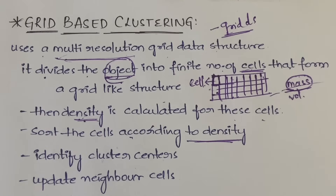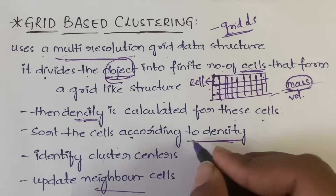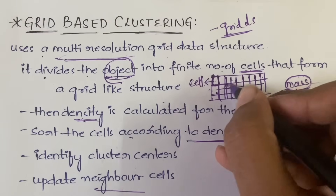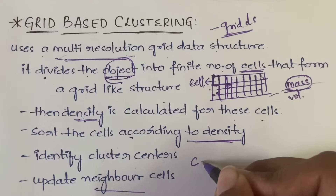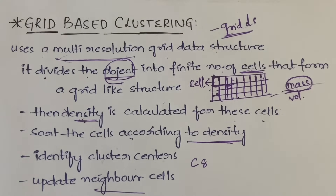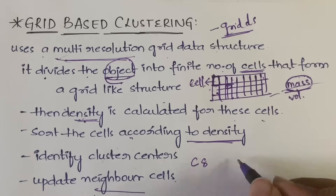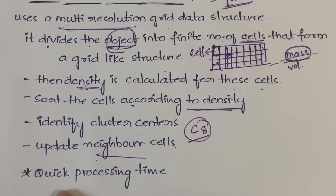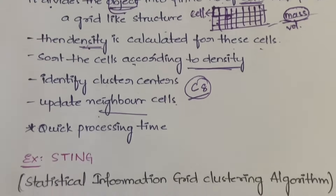After identifying cluster centers, you update the neighbor cells, informing them which cell has been identified as the cluster. For example, if cell C8 has been identified as a cluster, you update its neighbor cells saying that C8 has been made a cluster, and the neighbor cells will function accordingly. The key advantage of grid-based clustering is its quick processing time.